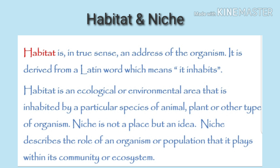Habitat includes all aspects of the area in which an organism lives, whether biotic or abiotic factors. For humans, the habitat is land. Habitat can be land, desert, or water for different organisms. So for humans the habitat is land, but on the land there are different niches which provide the conditions and requirements for the living organism.